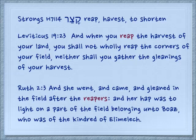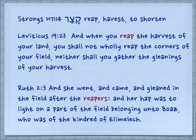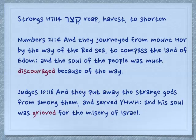Leviticus 19:23 — And when you reap the harvest of your land, you shall not wholly reap the corners of your field, neither shall you gather the gleanings of your harvest. Now this is a verb form, katzar. The present tense of the verb form, the participle tense, can be used as a noun for the people doing that job. That's what we see in Ruth 2:3 — And she went and came and gleaned in the field after the reapers, and her hap was to light on a part of the field belonging to Boaz, who was the kindred of Elimelech. Again, in a shortness of emotional strength.